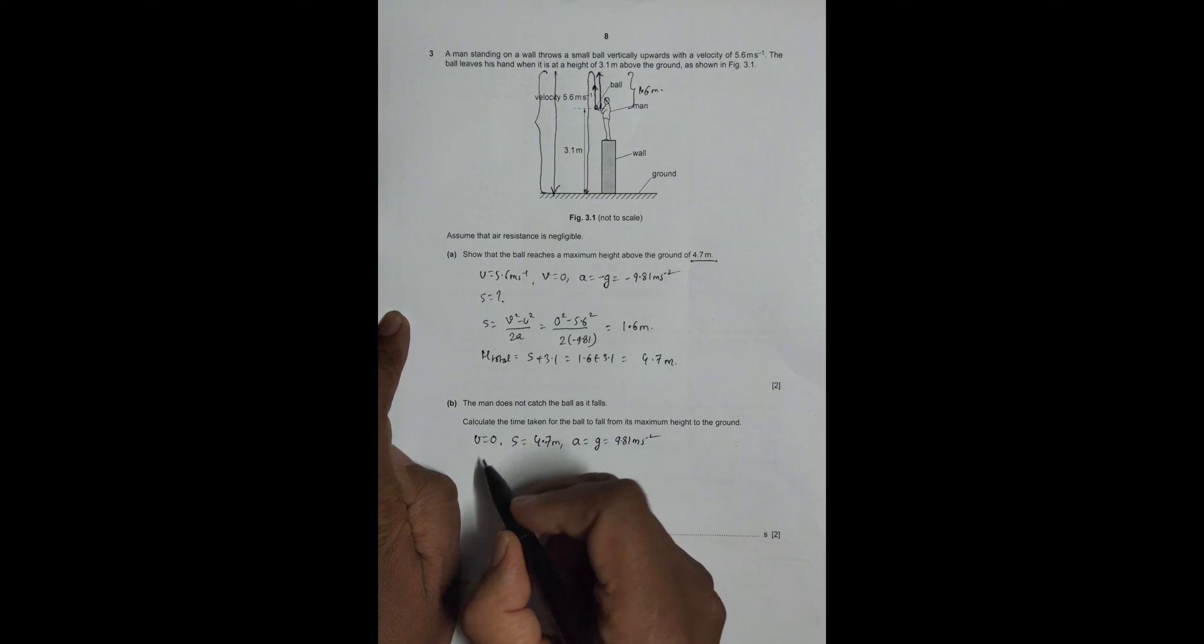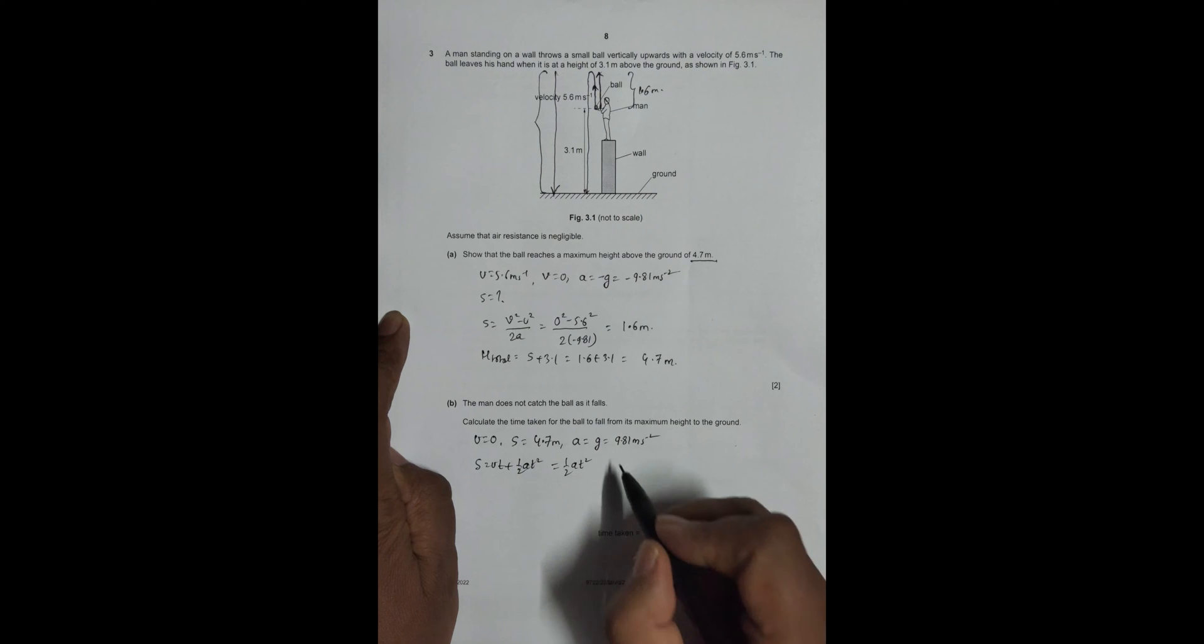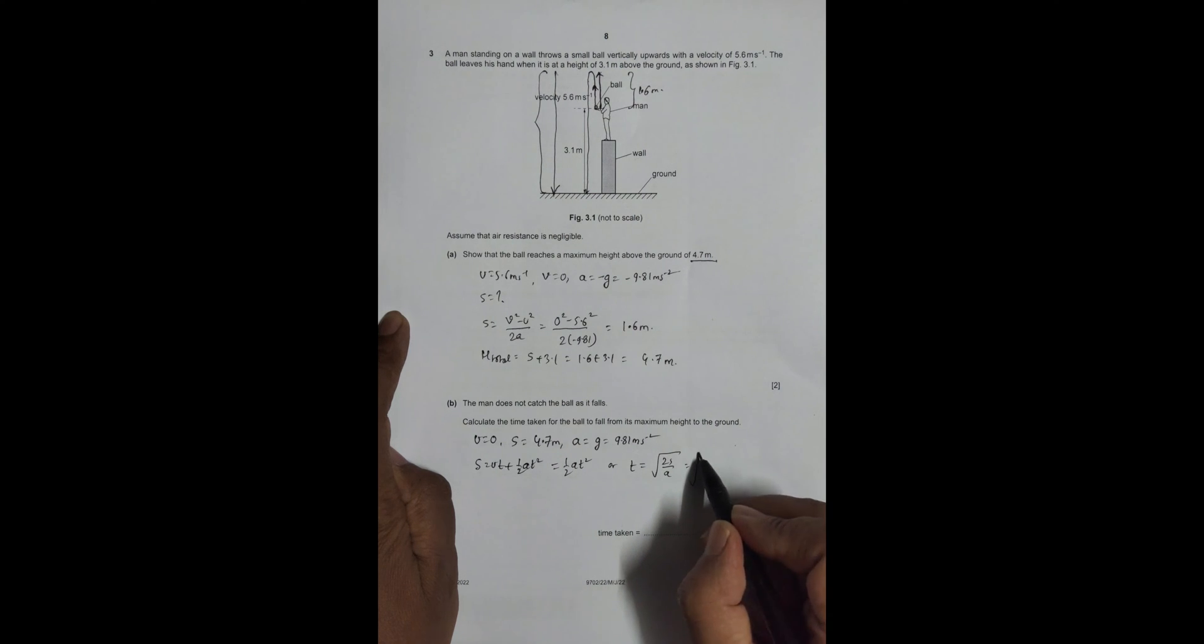So this gives me time. s equals ut plus 1/2 at squared, which equals simply 1/2 at squared because u equals 0. So this gives me t is equal to the square root of twice s divided by a.